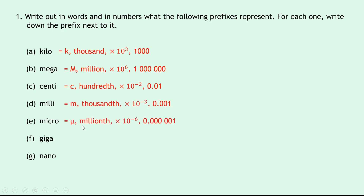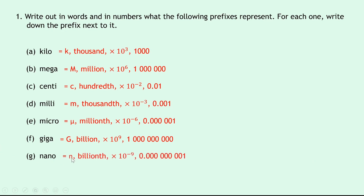Micro has the symbol mu, which is a millionth or times ten to the minus six, and written in full that's 0.000001. Part f, giga, is a capital G, which is a billion or times ten to the nine. And lastly, part g is nano, which has the symbol small n, a billionth or times ten to the minus nine, written in full as 0.000000001. All of that was straight from the table of prefixes which you're going to have to learn.